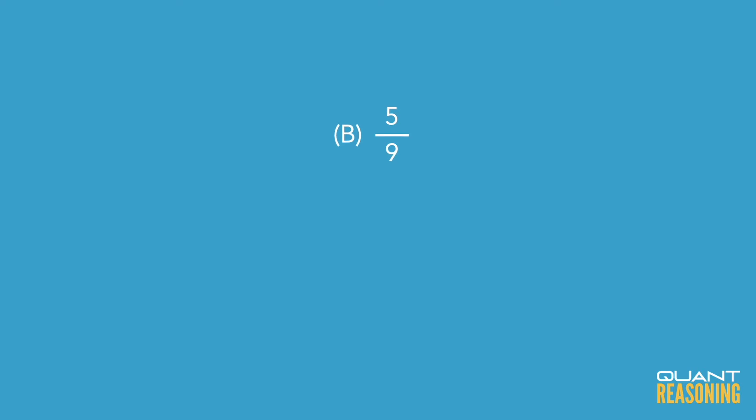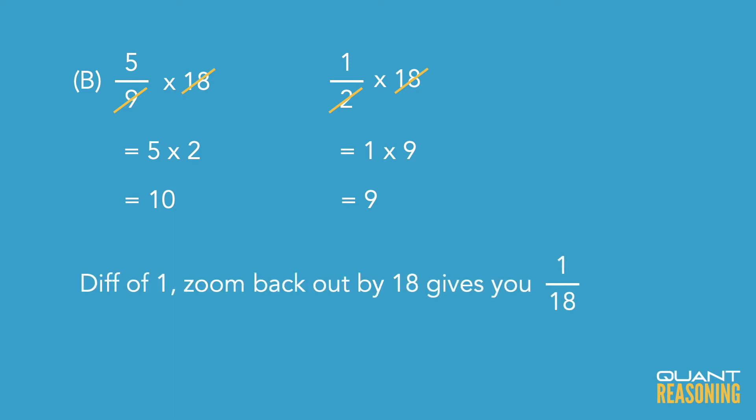Going on to answer choice B, we're comparing one half to five ninths. So in this case we should zoom in by a factor of 18. One half of 18 is 9 and five ninths of 18 is 10. So again a difference of one. This time though our factor when we zoomed in was 18, so zooming back out by a factor of 18 we have a difference of one eighteenth.